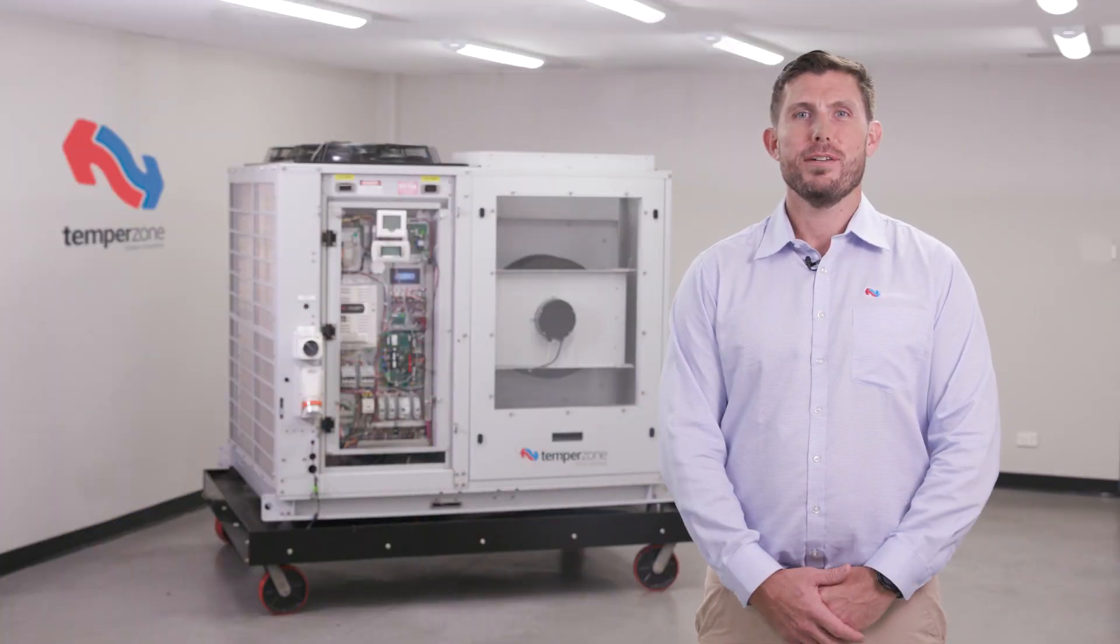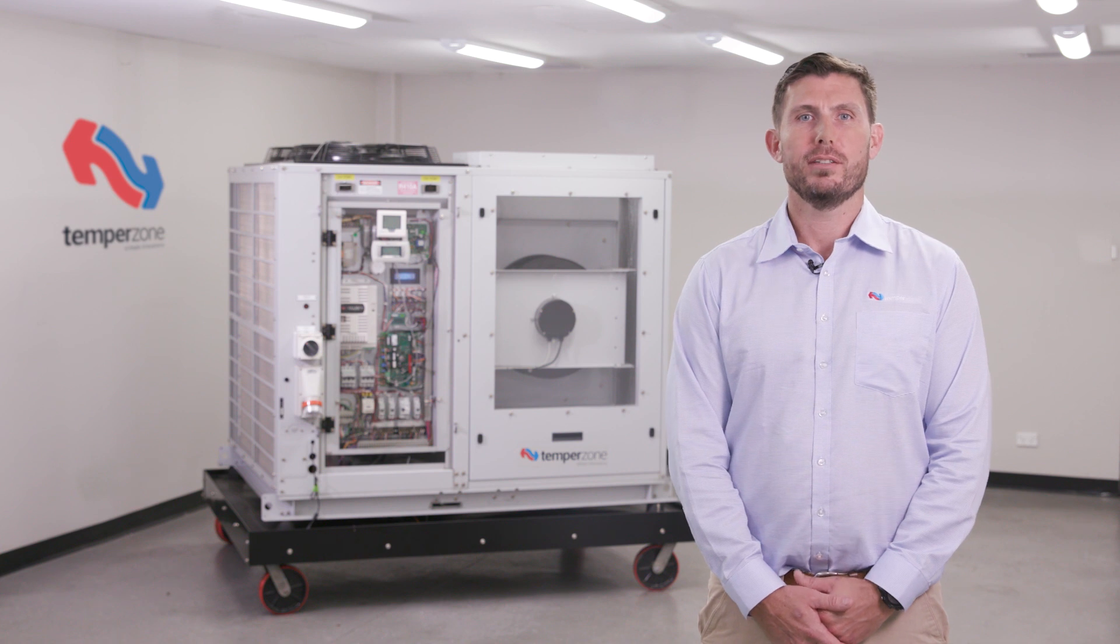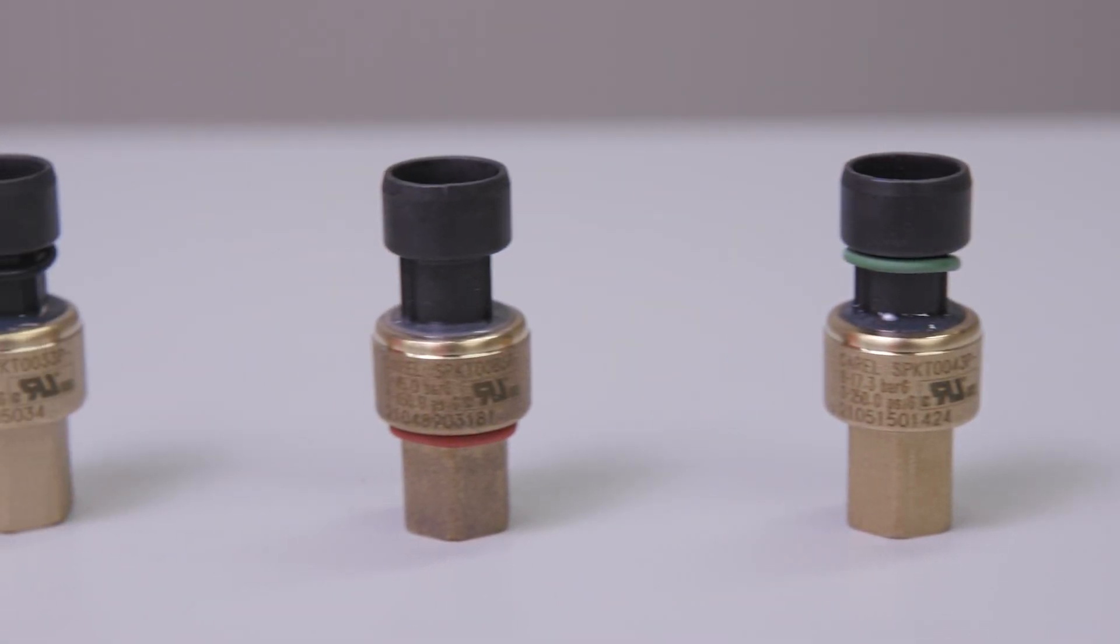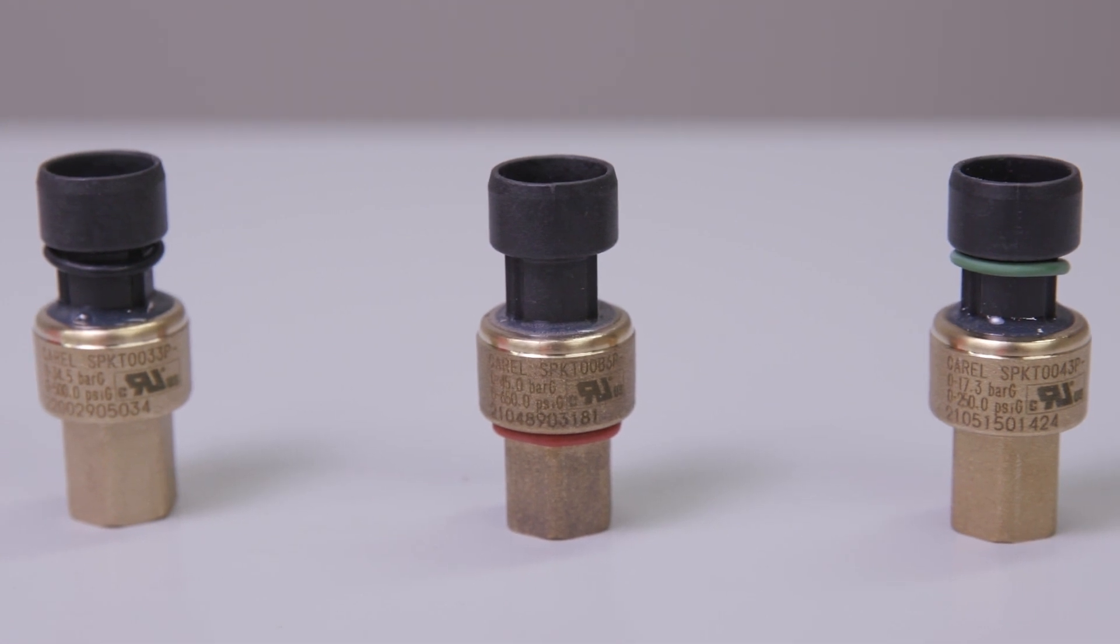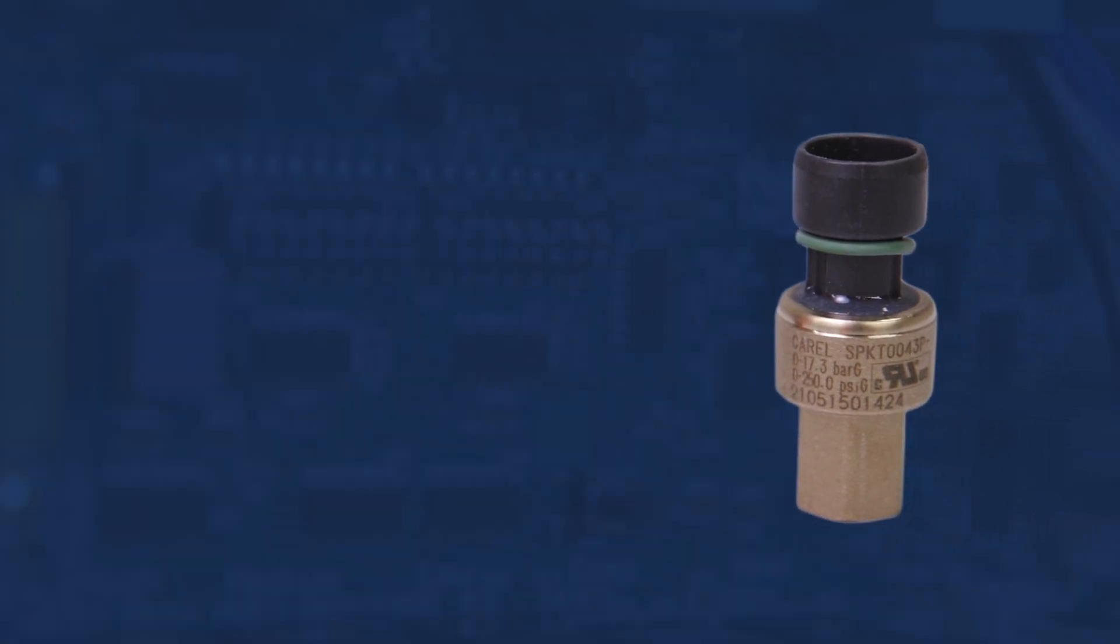Hello and welcome to the TempoZone tutorial on Corel pressure transducers. Three different types of transducers are used on TempoZone equipment to accurately read system pressures. A 0 to 17.5 bar